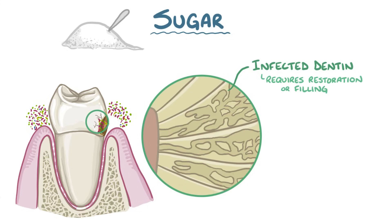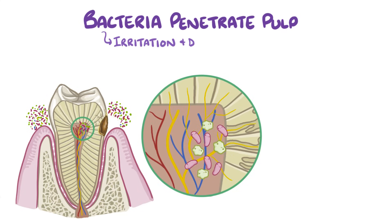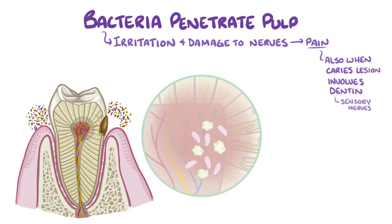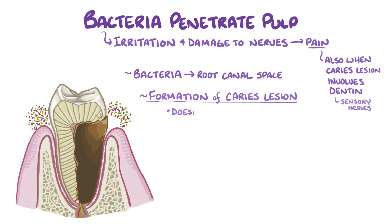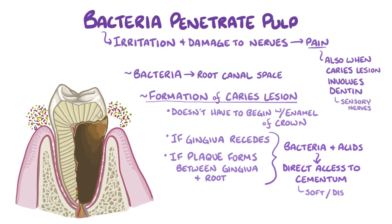If destruction continues into the dentin layer, then the caries lesion enlarges towards the pulp. Eventually the bacteria penetrate into the pulp, causing irritation and damage to the nerves. That's the stage when individuals usually experience pain, although pain can also happen when the caries lesion involves the dentin layer, since sensory nerve fibers travel through tubules in the dentin. Eventually, bacteria travel down into the root canal space and fill the entire inside of the tooth. It's worth mentioning that formation of a caries lesion doesn't have to start with the enamel of the crown. If the gingiva recedes or plaque forms between the gingiva and the root, bacteria and acids have direct access to the cementum, which is much softer than enamel and dissolves more quickly.